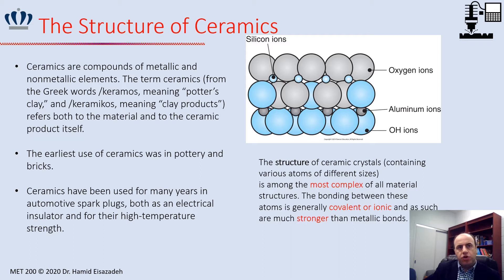Looking at the structure of ceramic materials: ceramics are compounds of metallic and non-metallic elements. The term 'ceramic' comes from a Greek word meaning potter's clay, so the word ceramic essentially means clay products. The earliest use of ceramic was in pottery and brick. Ceramics have also been used for many years in spark plugs because they are good electrical insulators and have high-temperature strength.